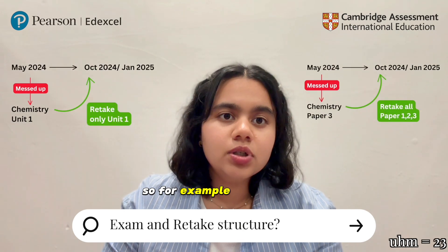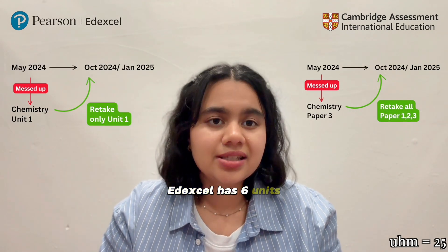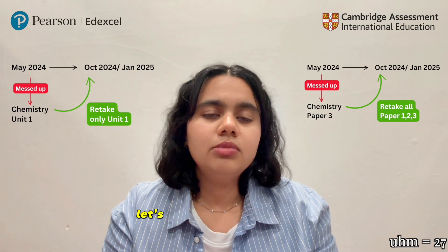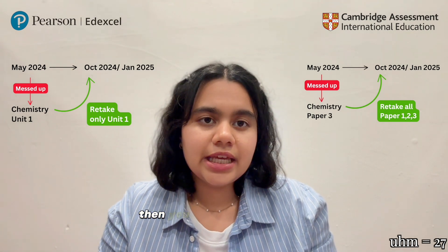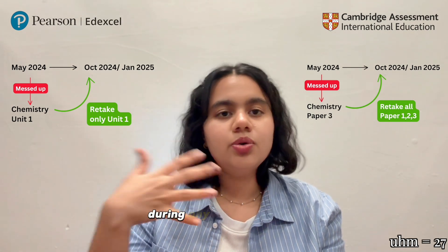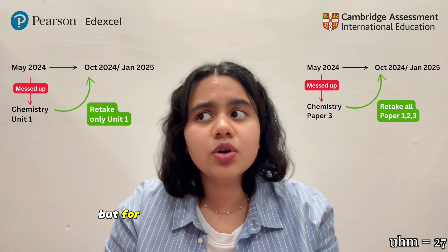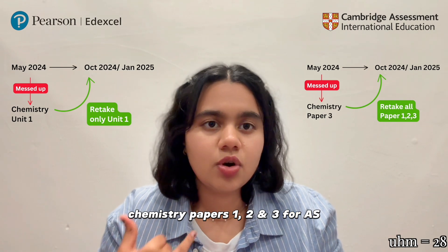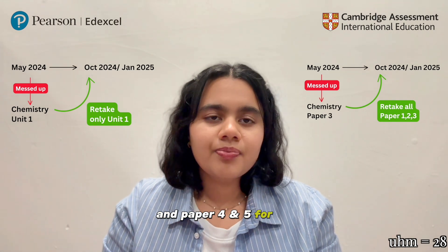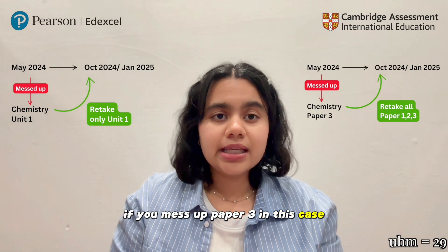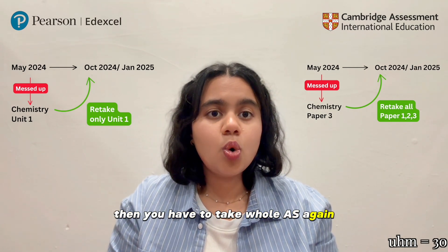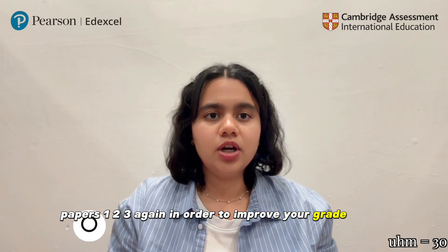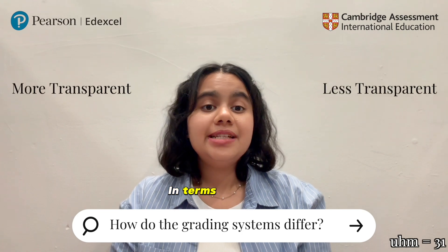For example, in Chemistry, Edexcel has 6 units — 3 units for AS and 3 units for A2. If you mess up unit 5, you can take only unit 5 during any of the sessions. But for Cambridge there are 5 papers in Chemistry: Papers 1, 2, and 3 for AS, and Papers 4 and 5 for A2. If you mess up Paper 3, you have to take the whole AS again, meaning you have to take Papers 1, 2, and 3 again in order to improve your AS grade.